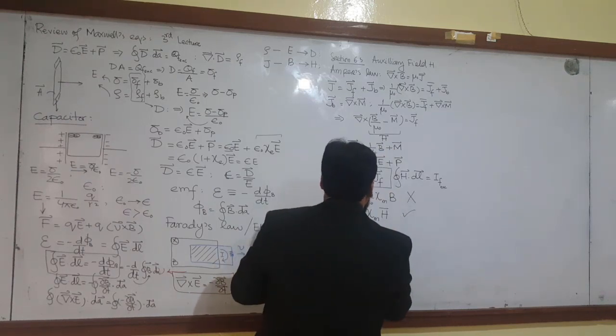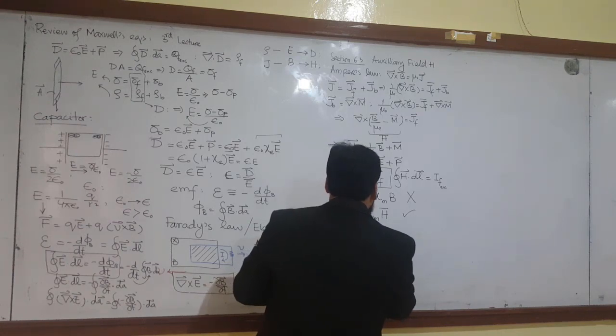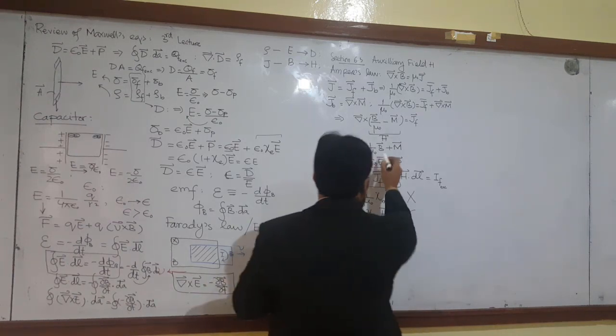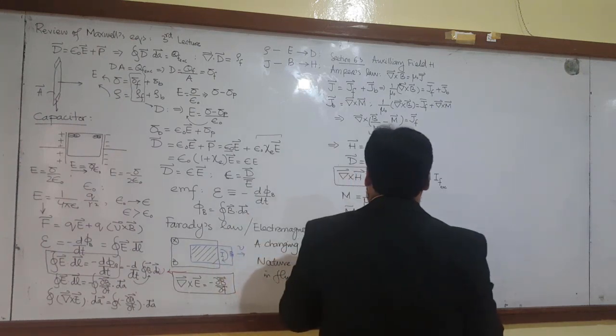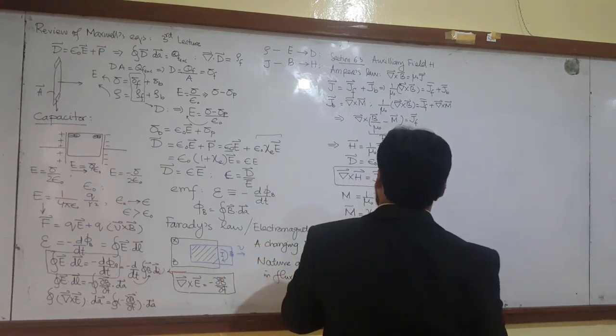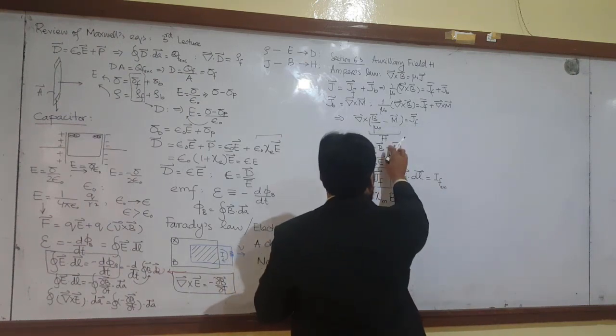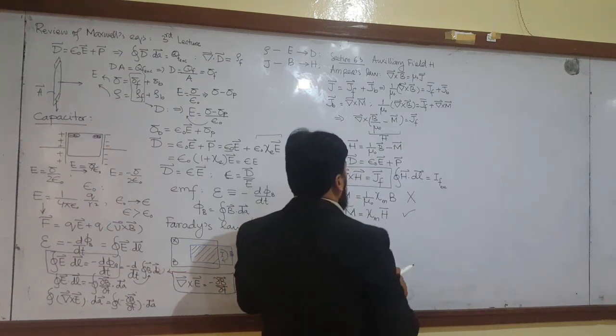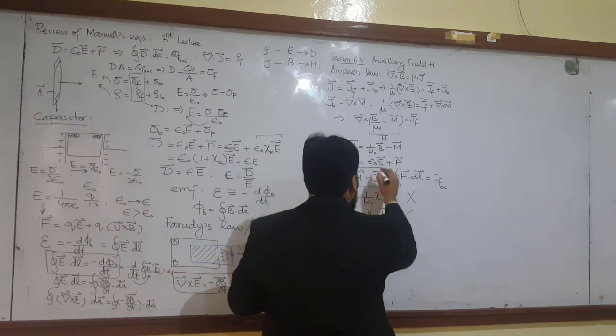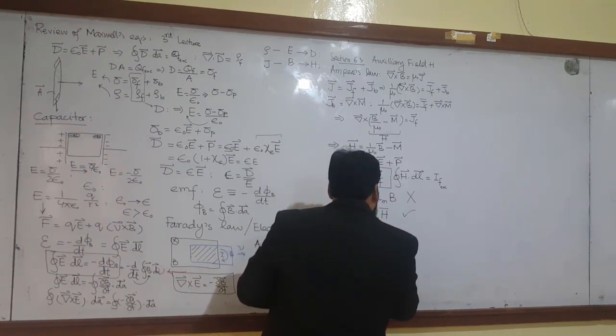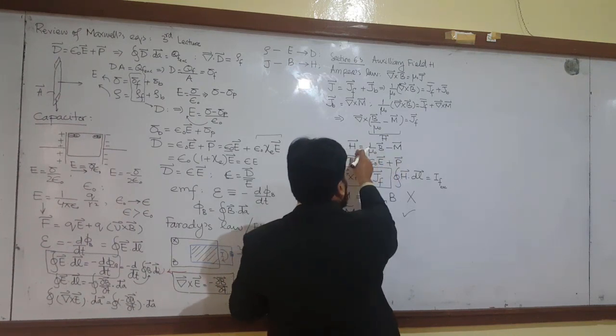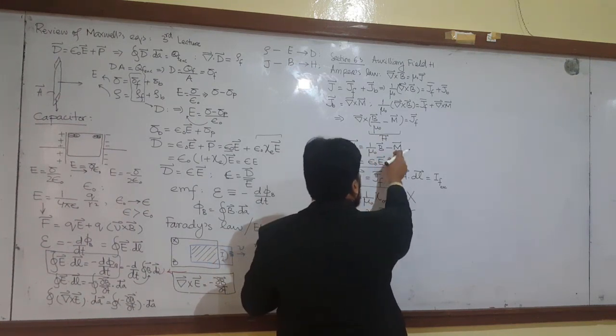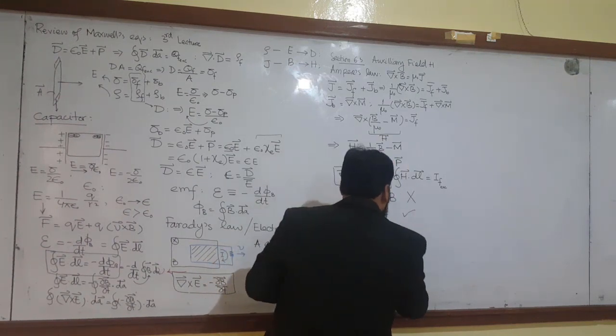I came right that H plus M means this M will go that way and one word, mu naught B. This is not plus but this is minus. So I came right from here that B is equal. This M will come here so it will become H plus M and mu naught will be multiplied.